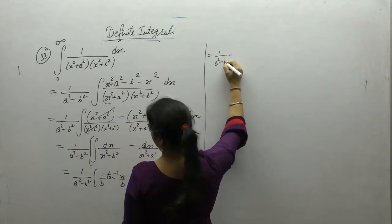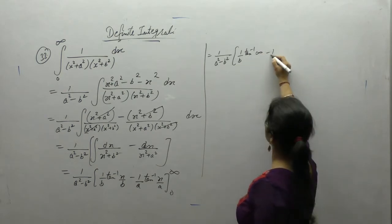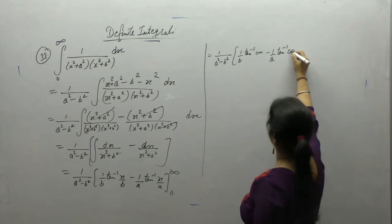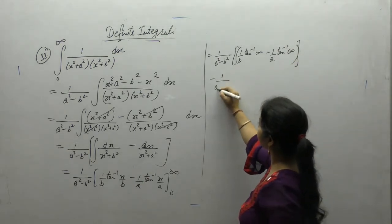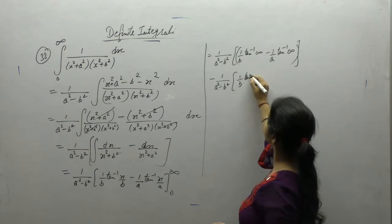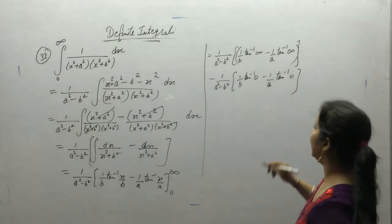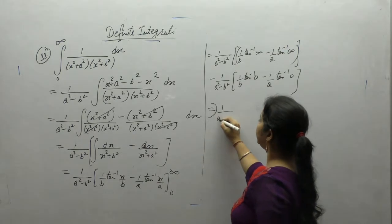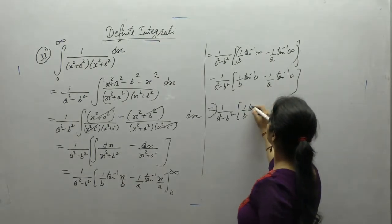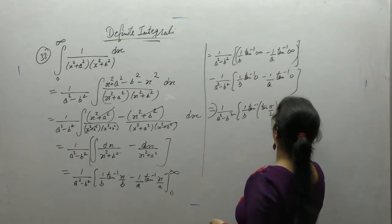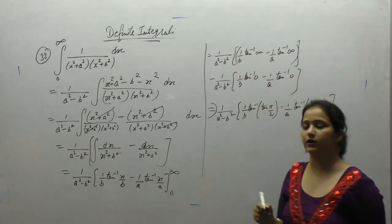Putting the limits: 1/(a² - b²) times [(1/b) tan⁻¹(∞/b) minus (1/a) tan⁻¹(∞/a)] minus the lower limit. tan⁻¹(0) = 0 and tan⁻¹(∞) = π/2, since 90 degrees corresponds to π/2. So write it as (1/b)·(π/2) minus (1/a)·(π/2).